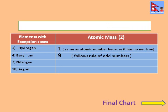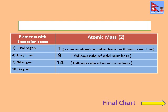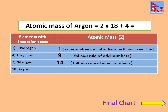Similarly, nitrogen follows the rule of even numbers, in which its atomic number is multiplied by 2, and therefore its mass is 2 × 7 = 14. At last, argon exceptionally contains 4 extra neutrons in it. So when we multiply its atomic number by 2 and add 4, we get its atomic mass: 2 × 18 + 4 = 40.